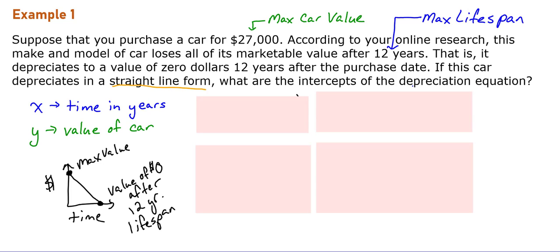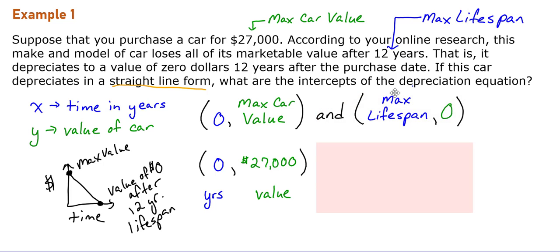Those two amounts identify our intercepts on our graph. The first intercept on the y-axis is 0 and the max car value, so our point is (0, 27000). Our other intercept, our x-intercept, is when the max lifespan occurs and our value of the car is 0, so that would be (12, 0). These are our two points on our depreciation equation.